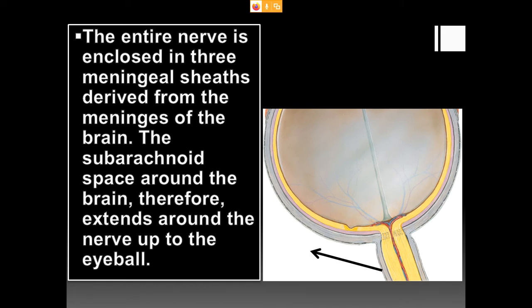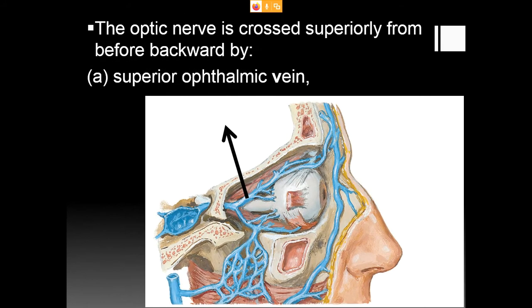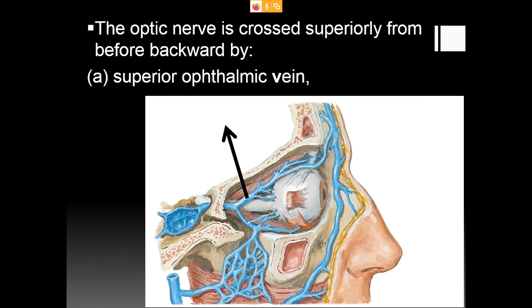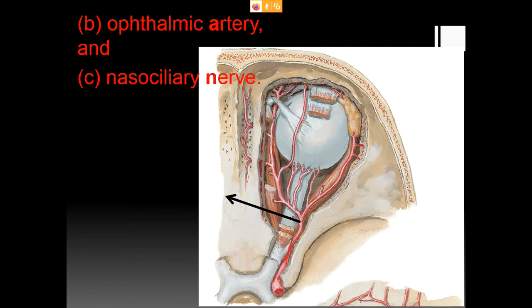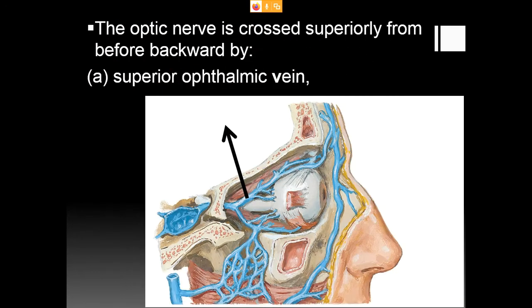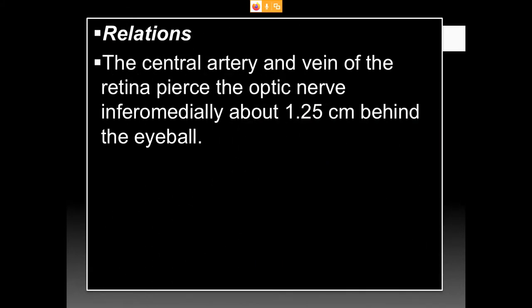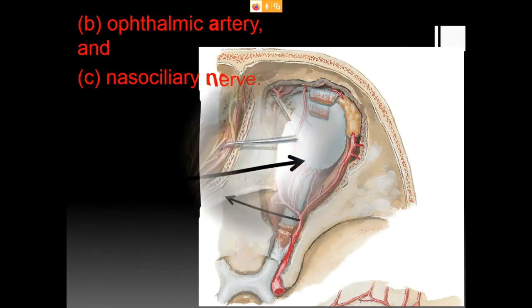The central artery and vein of the retina pierce the optic nerve inferomedially about 1.25 centimeters behind the eyeball. The optic nerve is crossed superiorly from before backwards by the superior ophthalmic vein, the ophthalmic artery, and the nasociliary nerve. These structures cross the optic nerve, whereas the central artery and vein of the retina pierce it.